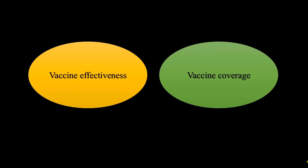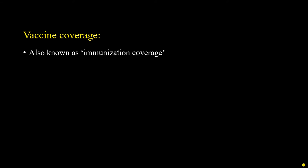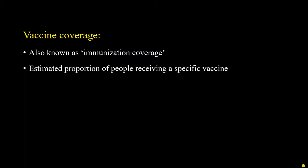To understand the concept and to answer the question of why the second dose of measles was introduced, we must understand two terminologies: vaccine effectiveness and vaccine coverage. Let us discuss vaccine coverage first. Vaccine coverage, also known as immunization coverage, is basically the estimated proportion of people receiving a specific vaccine. Let me simplify this for you.